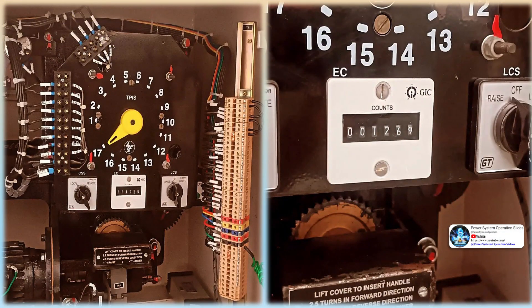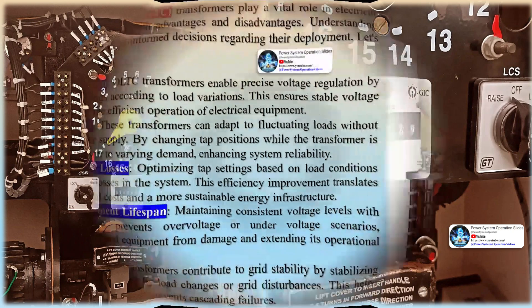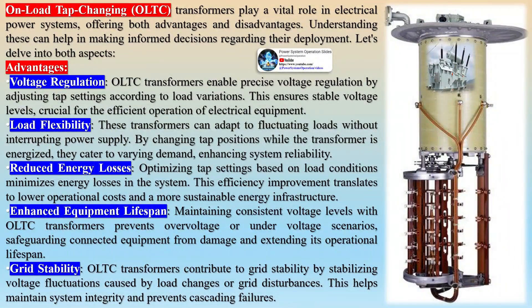On the disadvantages side, OLTC transformers are more complex than their conventional counterparts due to the addition of tap changing mechanisms. This complexity can result in higher initial costs, increased maintenance requirements, and potential reliability issues. The moving parts involved in tap changing mechanisms require regular maintenance to ensure smooth operation; failure to maintain these components can lead to operational disruptions and costly repairs.